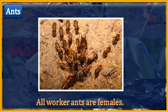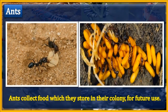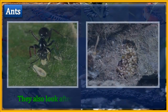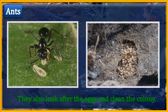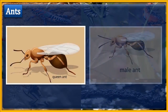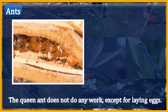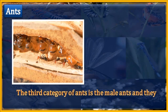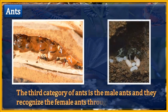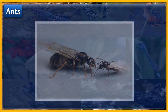All worker ants are females. Ants collect food which they store in their colony for future use. They also look after the eggs and clean the colony. They do not have wings, but the queen ant and the male ants have wings. The queen ant does not do any work except for laying eggs. The male ants recognize the female ants through their smell. The worker ants are further classified into four groups according to the work they do.